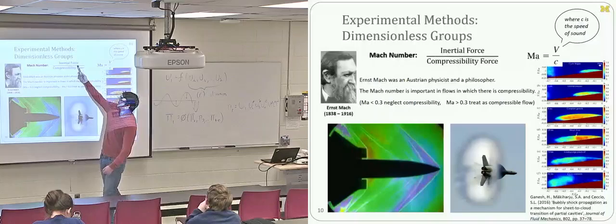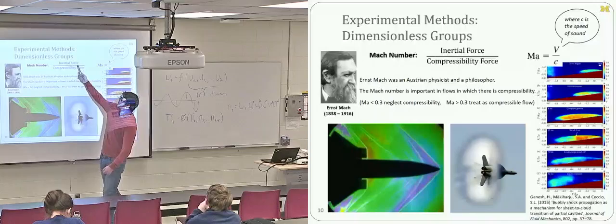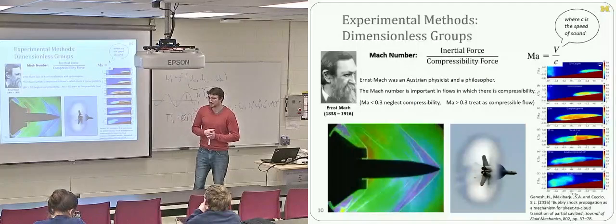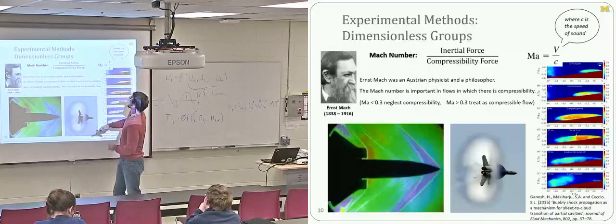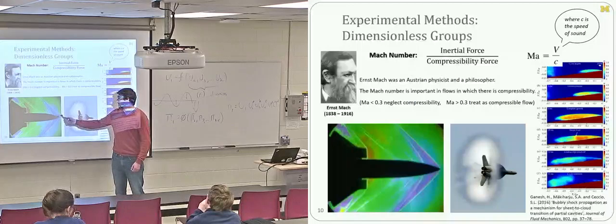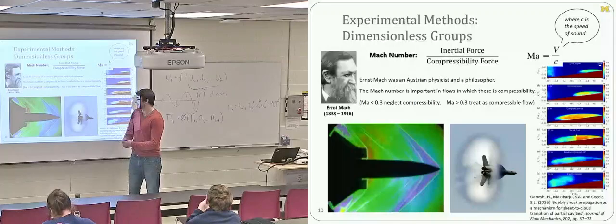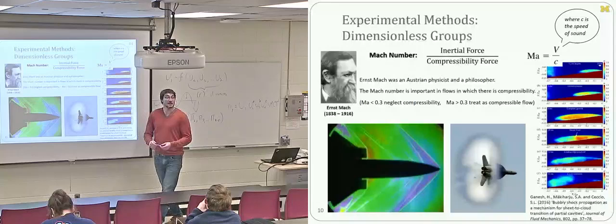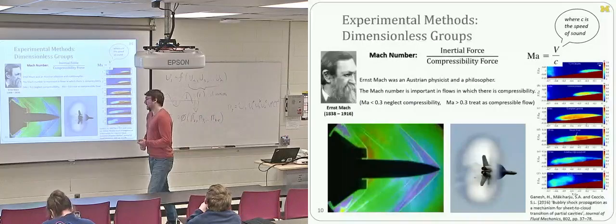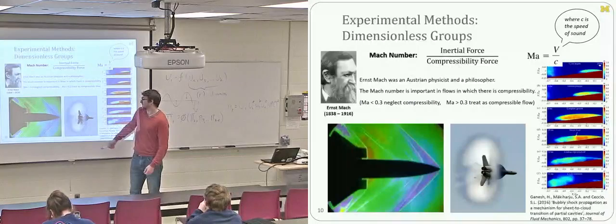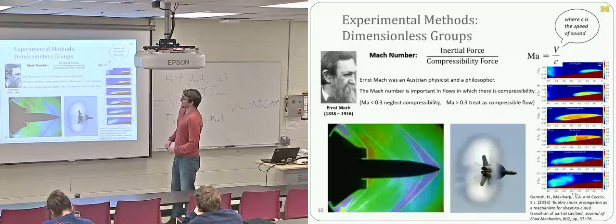The Mach number — inertial force relative to compressibility forces, the springiness of a fluid — dictates when you cross the speed of sound. It's basically velocity divided by the speed of sound, giving subsonic, transonic, or supersonic operation. In water, the speed of sound is very high so we rarely go supersonic. But in aerospace, this is definitely relevant — it's why you get Mach cones when aircraft break the sound barrier.